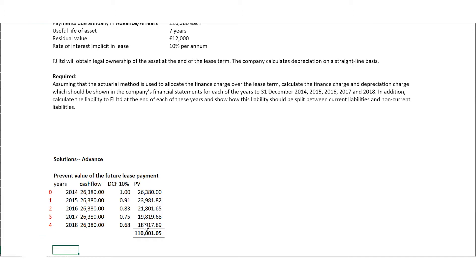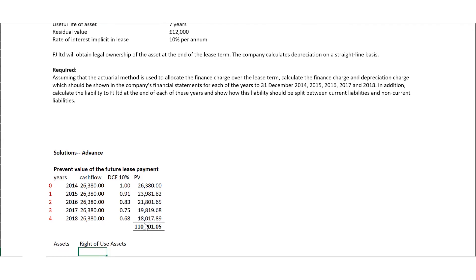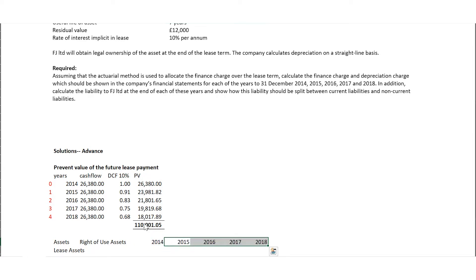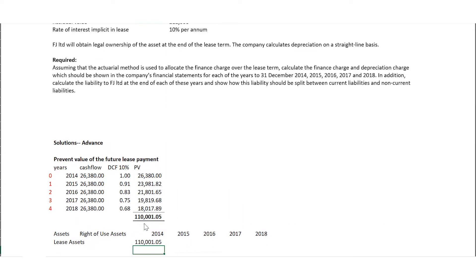The next thing we want to do is what goes to the asset side. Because this is a right of use asset, we are going to have the asset side and also the liability side. The lease asset is the PV of the future lease payment. So I'm going to have for 2014 down to 2018 — the value of the lease asset is the figure we've already calculated.